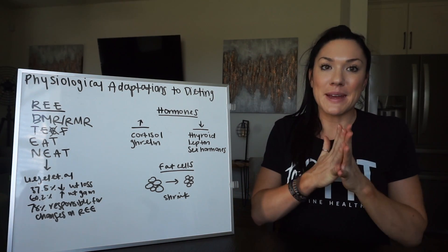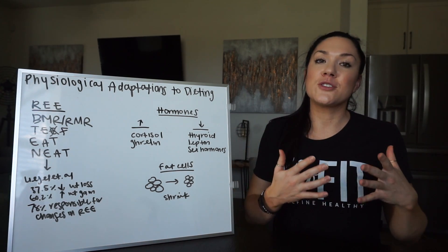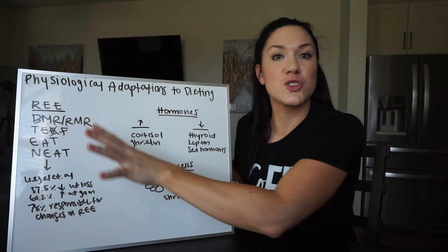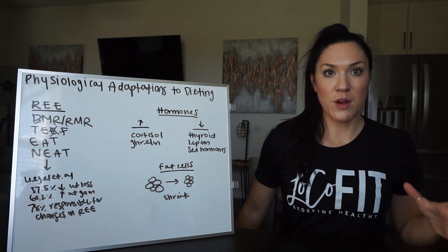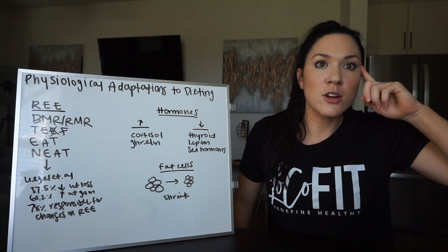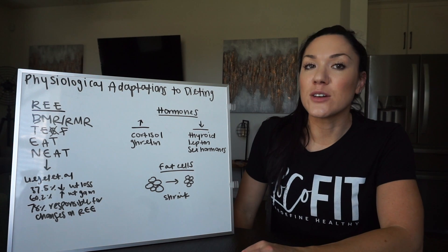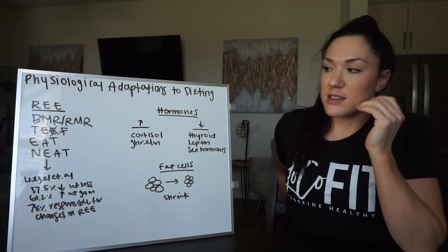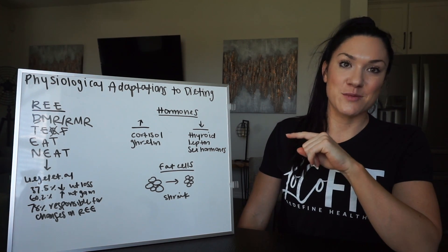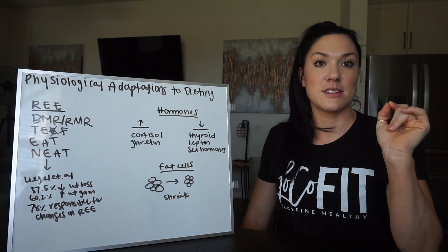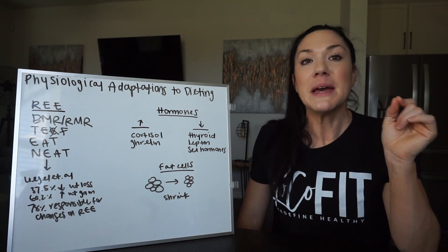NEAT stands for non-exercise activity-induced thermogenesis — basically how many calories you burn not doing exercise. This is going to be fidgeting, moving around, getting up from the couch, just being active — all these kinds of small movements. When you are dieting, your body will severely restrict your NEAT levels. Anybody who's been very lean knows this goes down dramatically when you're dieting. If you're on the couch prepping and something needs to get done, you're like, 'I'll do it later' — you are the epitome of a sloth. Sloth mode is engaged.